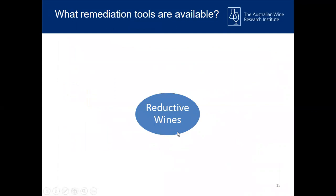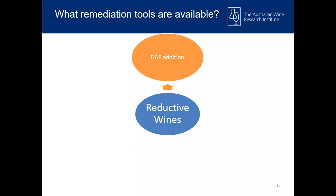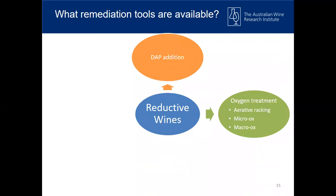This brings us to the second part of the webinar — remediation strategies. What do you do once you actually have reductive characters in your wines? We do have a couple of options. The first option is DAP addition, which is our first point of call — if we have ferments with low YAN, we increase our DAP, because a stressed yeast without enough nutrients is prone to use amino acids and produce a lot of stinky sulfur compounds. If that doesn't work, you have the option of oxygen treatment: variative racking, oxidative splashing and pump overs, micro-oxygenation at 0.5 to 10 mls of air per minute per liter per month.